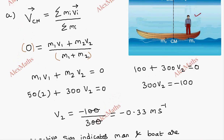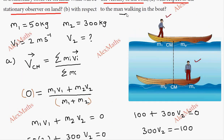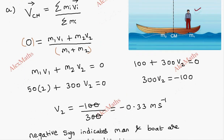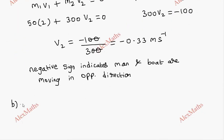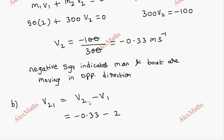The second part asks for the velocity of the boat with respect to the man walking on the boat. This is v2 minus v1, so −0.333 minus 2, which gives a total of −2.33 meters per second. The negative sign indicates the boat moves in the opposite direction relative to the man.